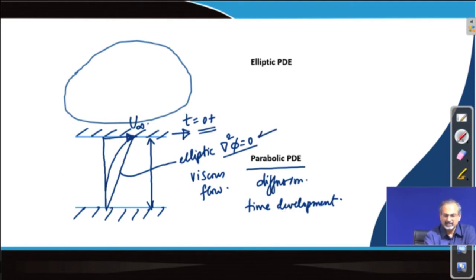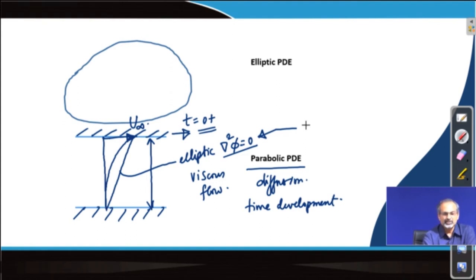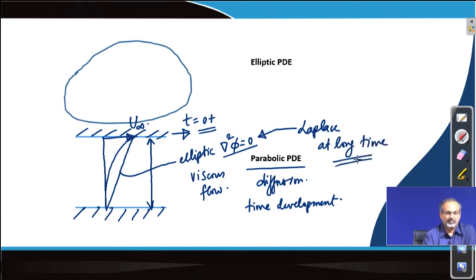We solved this equation for a one-dimensional heat conduction problem earlier where we did see linear velocity profile-like behavior, but there it was a temperature profile we were talking about. This linear behavior comes from the Laplace equation which will be reached at long time. These are inherent characteristics of the partial differential equation of the parabolic kind.